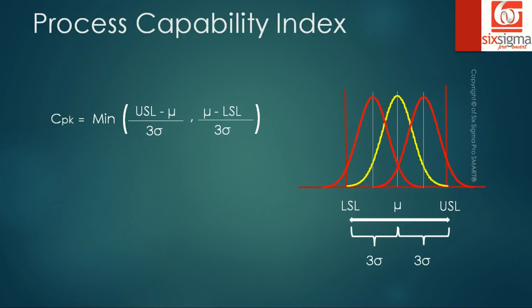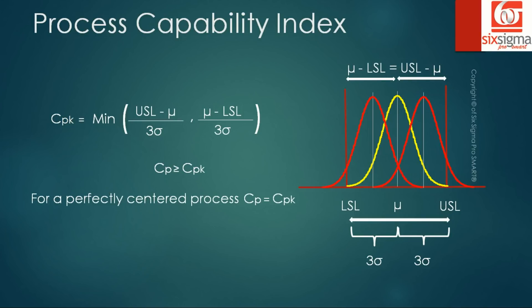Let's see this with the help of a diagram. Whether the process shifts left or right, we decide which specification limit is more critical based on the distance between the new process mean and each limit. An important point: CP is always greater than or equal to CPK. CP equals CPK only in the case of a perfectly centered process.